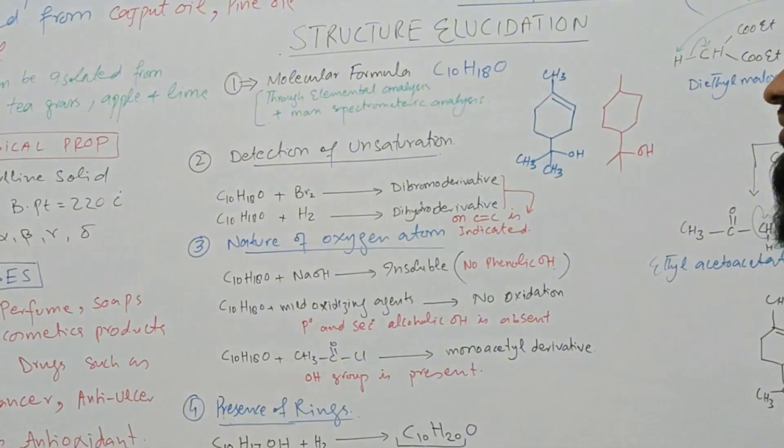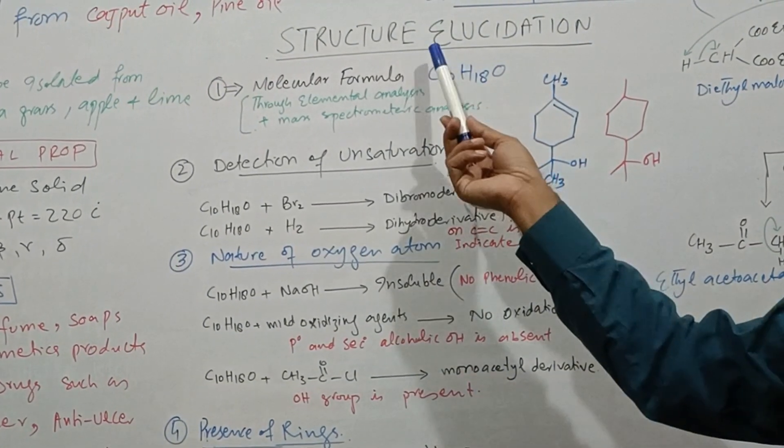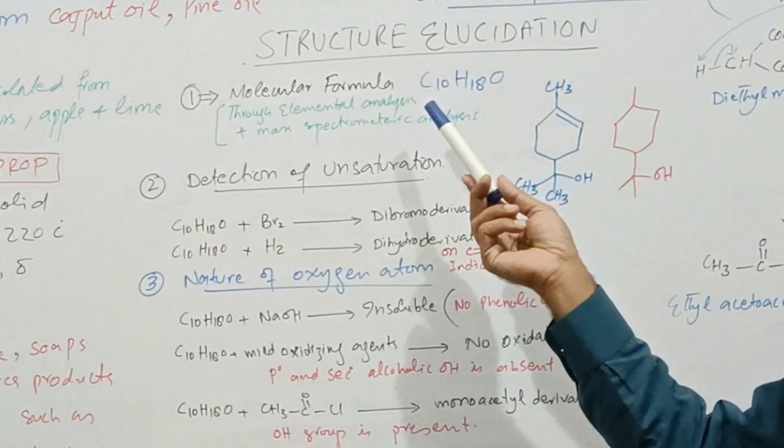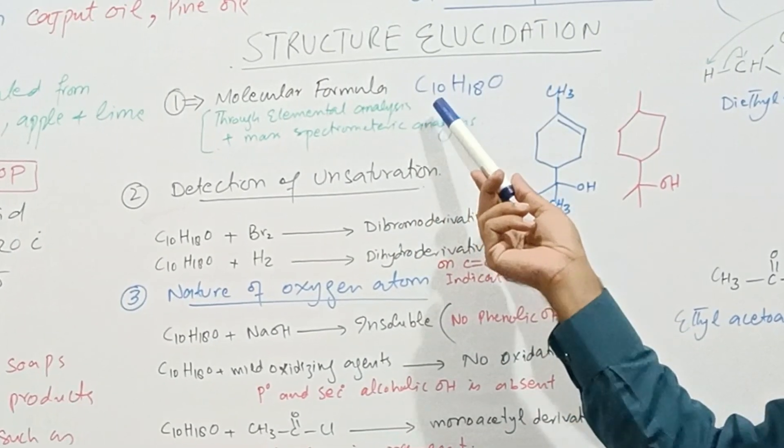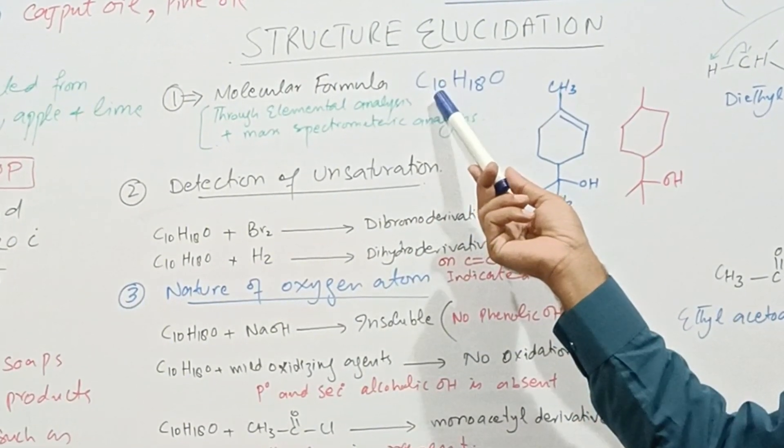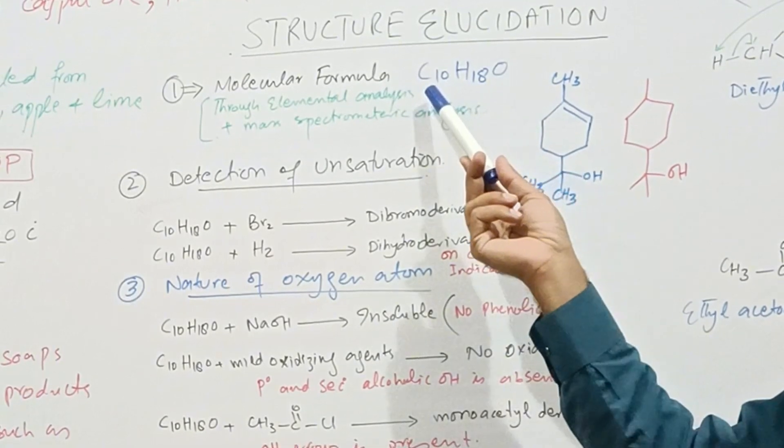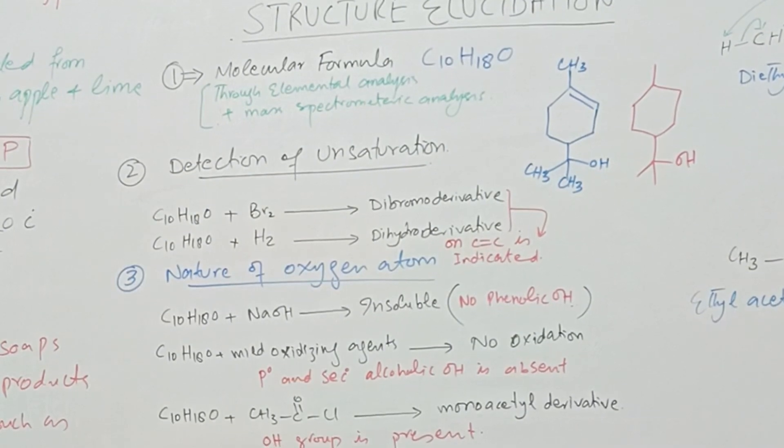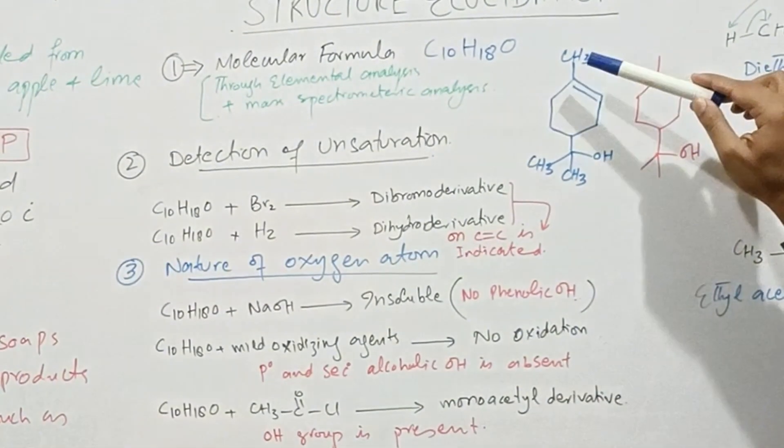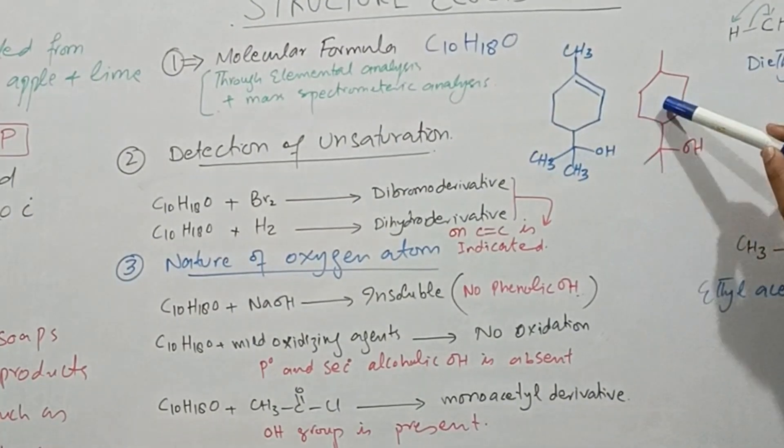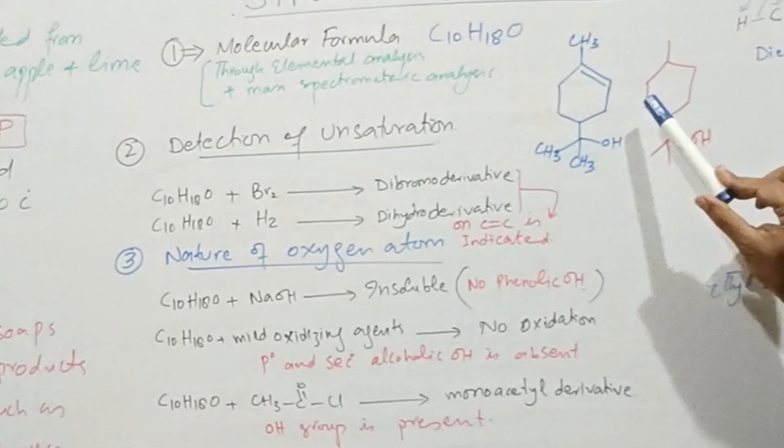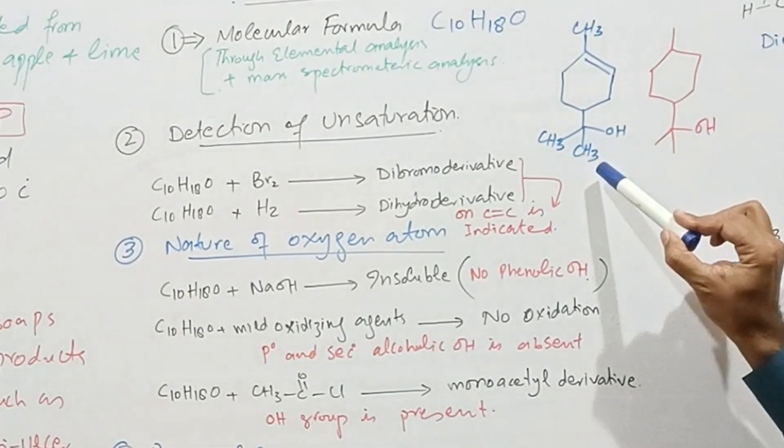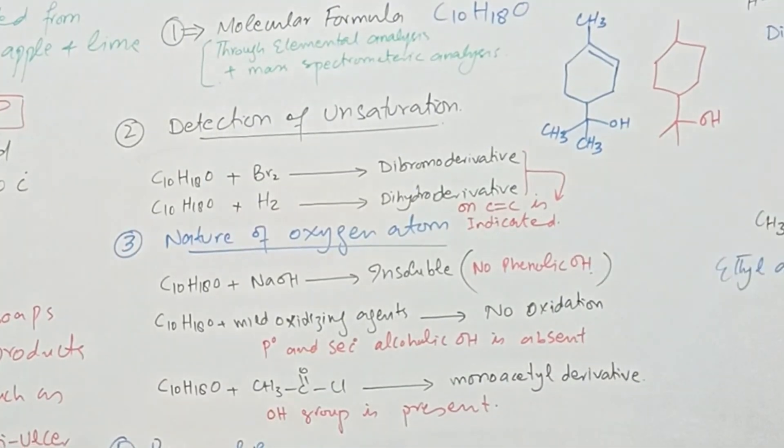The most important part is structure elucidation. Elemental analysis and mass spectrometry yield the molecular formula C10H18O. The structural formula is shown here. We can also write it with line-angle formula as shown in this red structure.